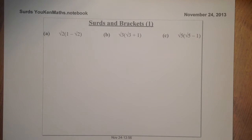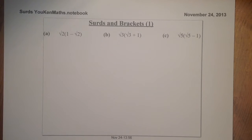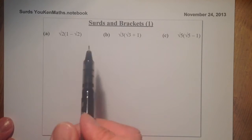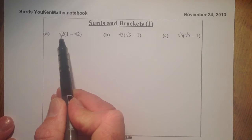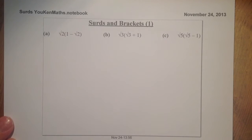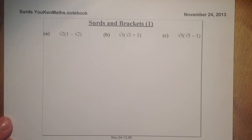We're going to multiply out a single bracket first of all, then we're going to multiply out a double bracket. For the double bracket I'm going to use the FOIL method. Remember when we're multiplying out brackets, we're multiplying the terms on the inside of the bracket by the term outside. It's just the same as normal numbers, or numbers and letters — the same as algebra. We're hoping to gather up numbers at the end and possibly simplify them if needed.